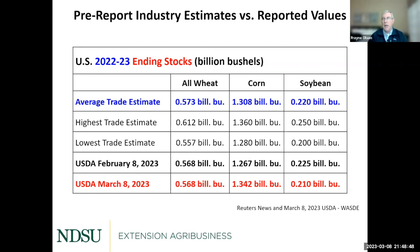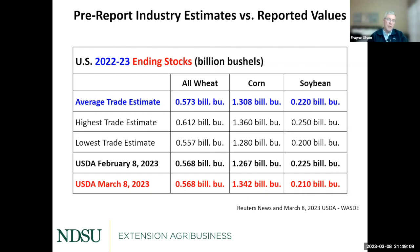On the soybean side, the average trade estimate was looking for a slight increase in ending stocks, but we actually got a slight decrease. Most of that decrease was a combination of a slight decrease in crushing, but a larger than expected increase in exports. Crushing from last month to this month decreased a little bit while exports were increased. So we had about a 15 million bushel increase in consumption, which took ending stocks down. That was, if anything, a little bit of supportive news for the soybean market.